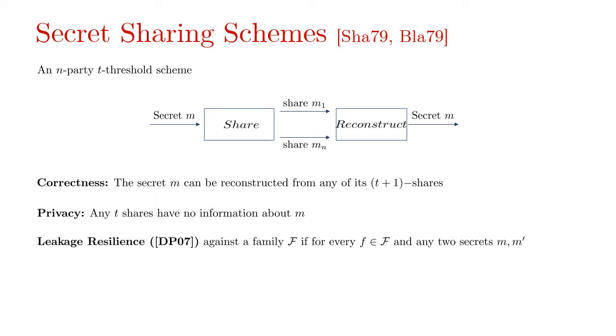The second property is privacy which requires that any set of T shares have no information about the message M. In 2007, Dziembowski and Pietrzak initiated the study of leakage resilience in secret sharing schemes, where a secret sharing scheme is said to be leakage resilient against a leakage function family script F, if for every leakage function F in the family and any two secrets M and M', the leakage on shares of M is indistinguishable from leakage on shares of M'.